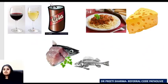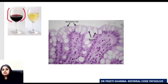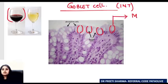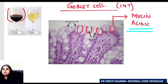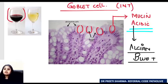Moving to dinner: starting with beverages. A goblet is like a wine glass, and goblet cells are normal cells seen in the intestine. They contain acidic mucin. If you want to confirm acidic mucin in pathology, you use Alcian blue stain — goblet cells are Alcian blue positive for their acidic mucin content.